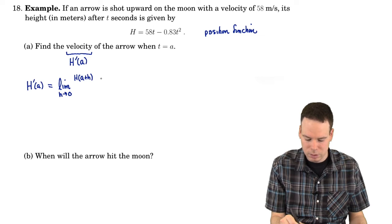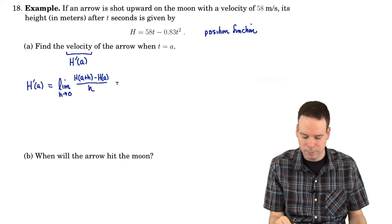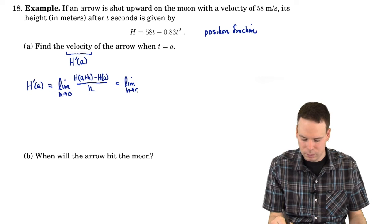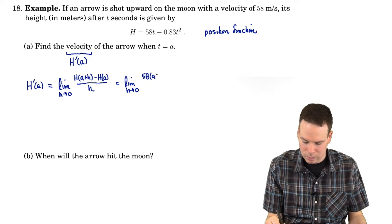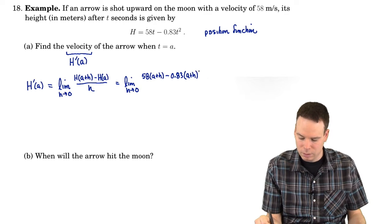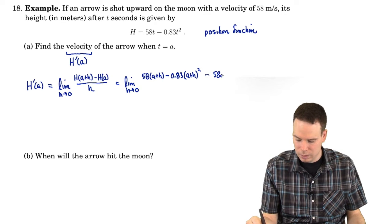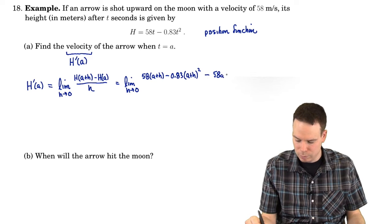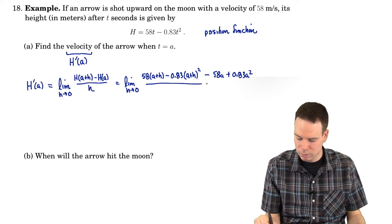Now let's pop in everything. So this is 58 times (a plus h) minus 0.83 times (a plus h) all squared minus the function at a. 58a minus, the minus 0.83. So that's a plus 0.83a squared. a squared all over h.